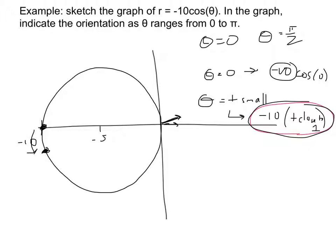If I wanted to, I could have used a specific value. I could have said when theta is pi over 6, I'm going to get negative 10 times the cosine of pi over 6. Well, that's negative 10 times root 3 over 2, which gives me negative 5 root 3. Clearly a negative value. When I'm following an angle of pi over 6, I'll have this negative value.